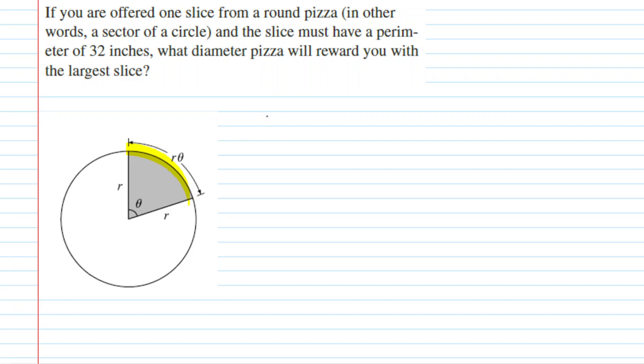We might remember from a pre-calculus course that arc length, usually symbolized by S, is equal to the radius of the circle multiplied by the central angle, as long as that central angle is in radians. So this is why we have labeled that arc length as r times theta.